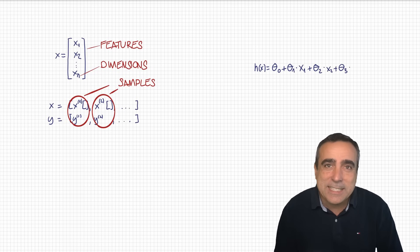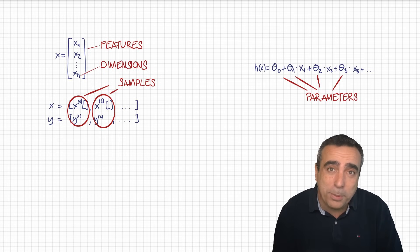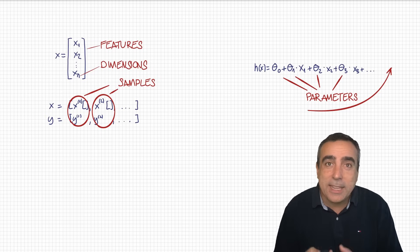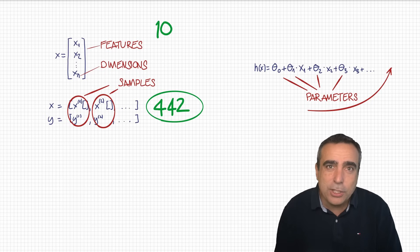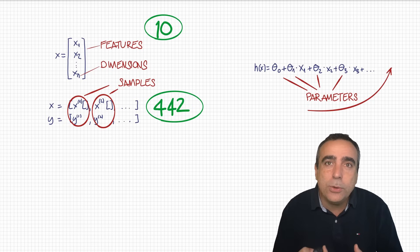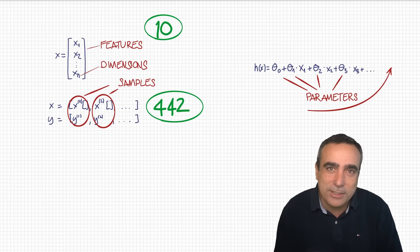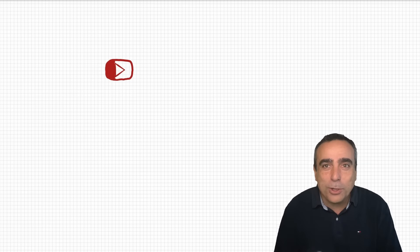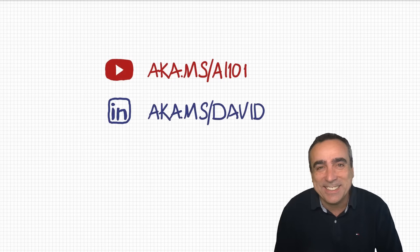Here's a problem: as the number of dimensions increases, the equations to find parameter values become more and more complex and eventually very slow to compute. Even the simple diabetes dataset has 442 samples and 10 features, making the resulting equations enormous. In other cases it's directly impossible to find parameters with a closed-form solution. The way we solve this challenge — which we'll see in the next episode — is a technique absolutely fundamental to machine learning called gradient descent. You can watch these videos at aka.ms/ai101 and follow me on LinkedIn at aka.ms/davidc. Thank you for watching!